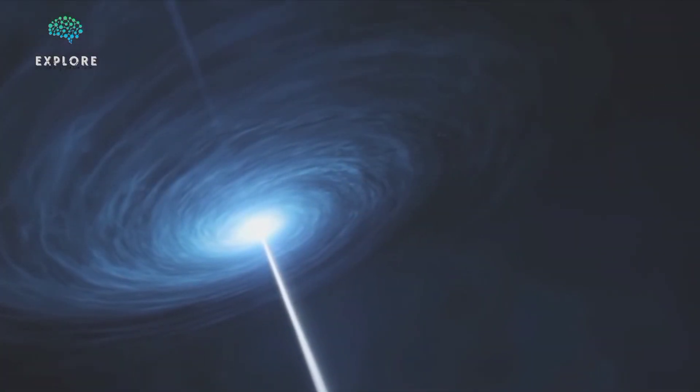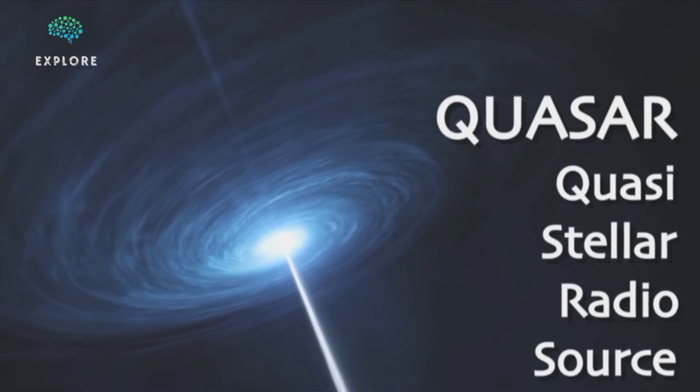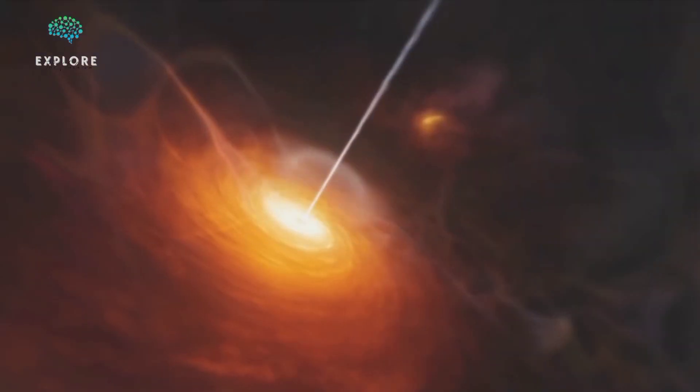Quasars are compact areas in the center of a galaxy. They give off enormous amounts of energy. Quasars are actually some of the brightest objects in the universe. There are no quasars near our Milky Way.